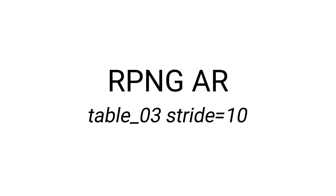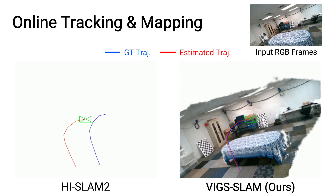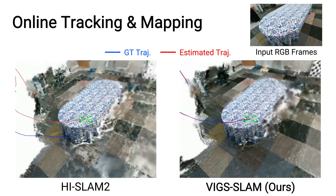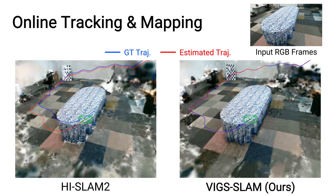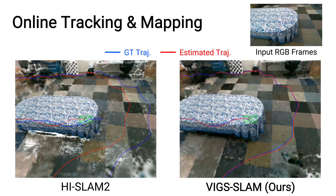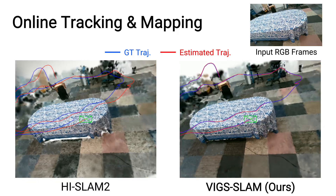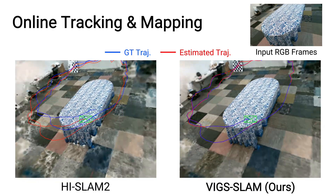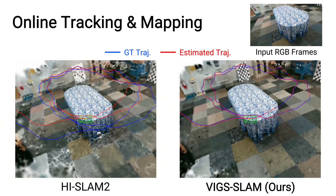We first evaluate on the RPN-GAR table dataset table03 sequence with a strident setting. Our VIGS SLAM is able to initialize from the very beginning, maintain robust tracking throughout the sequence, and build a high-fidelity Gaussian map in an online fashion. In contrast, HighSlam2 relies purely on visual correspondence and does not utilize IMU signals, therefore experiencing large trajectory drift with poor Gaussian mapping.